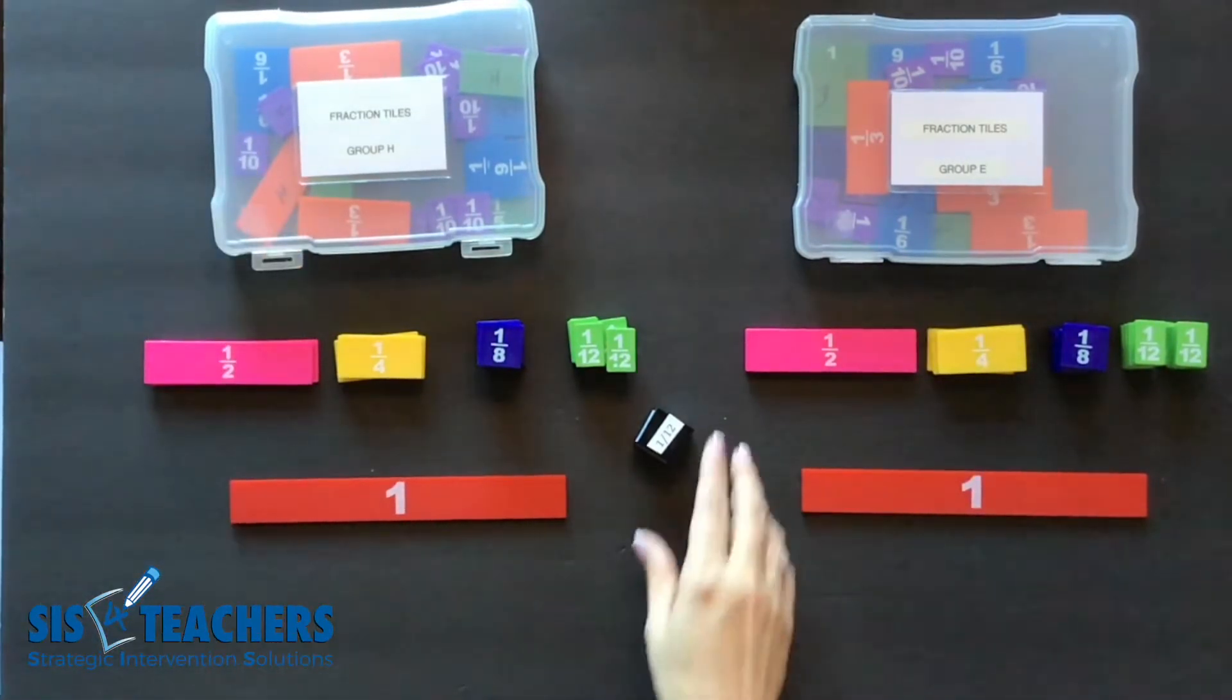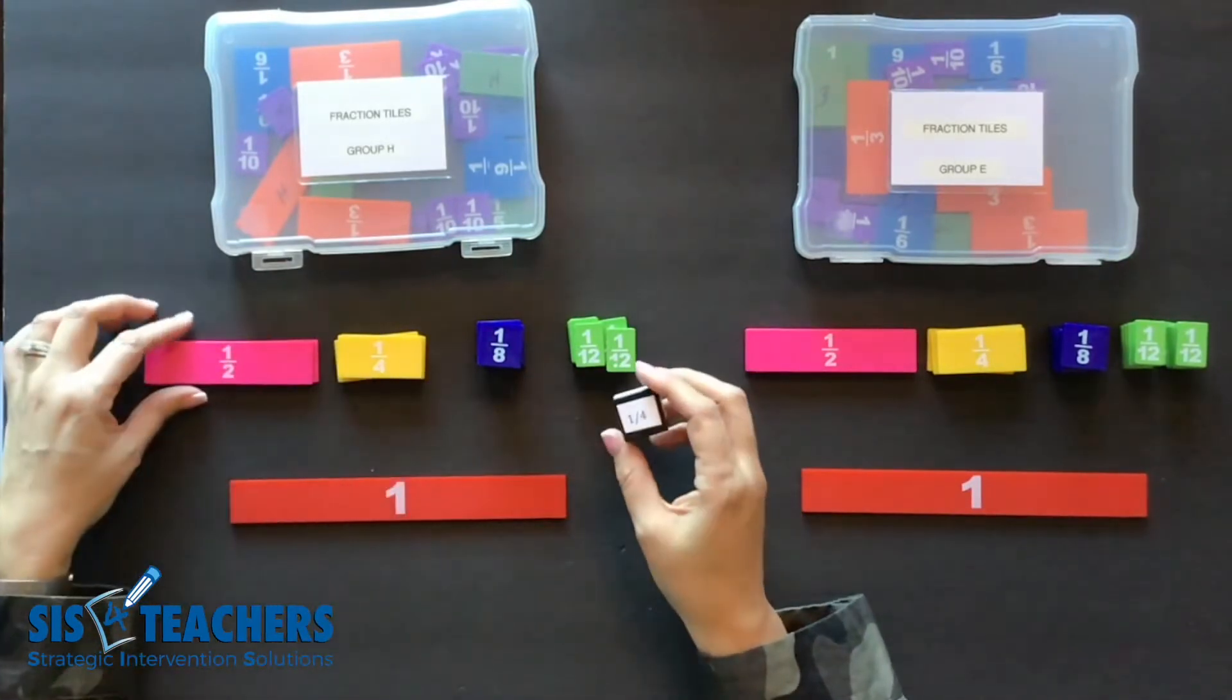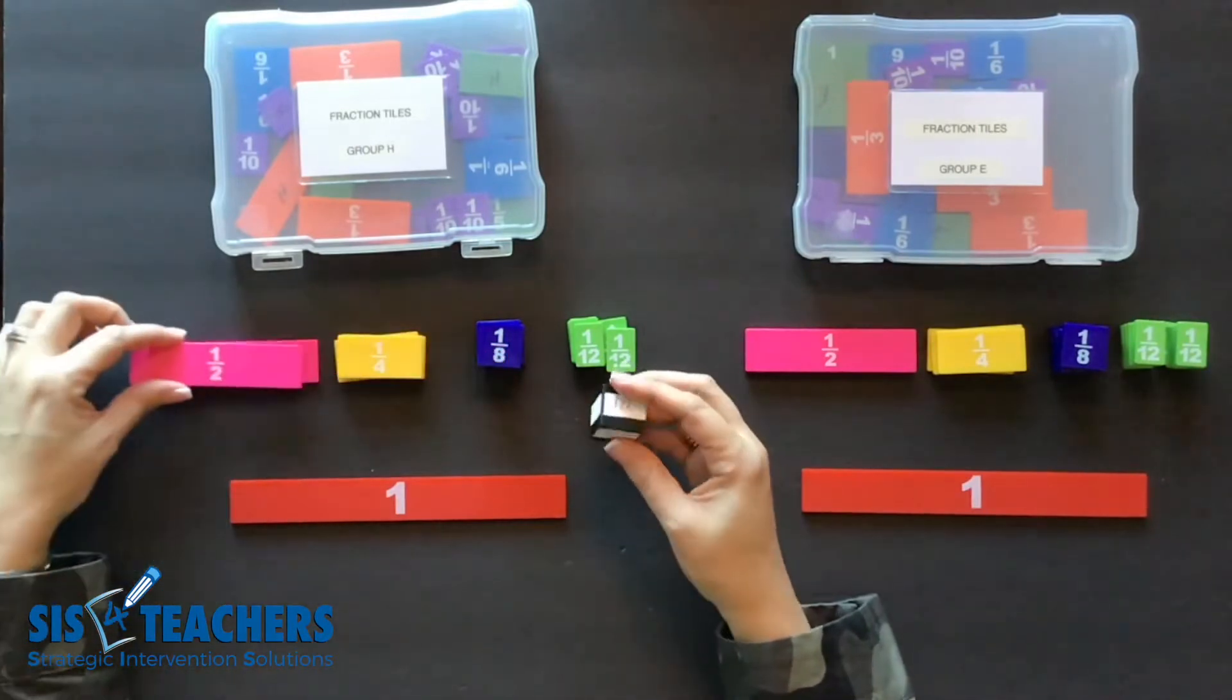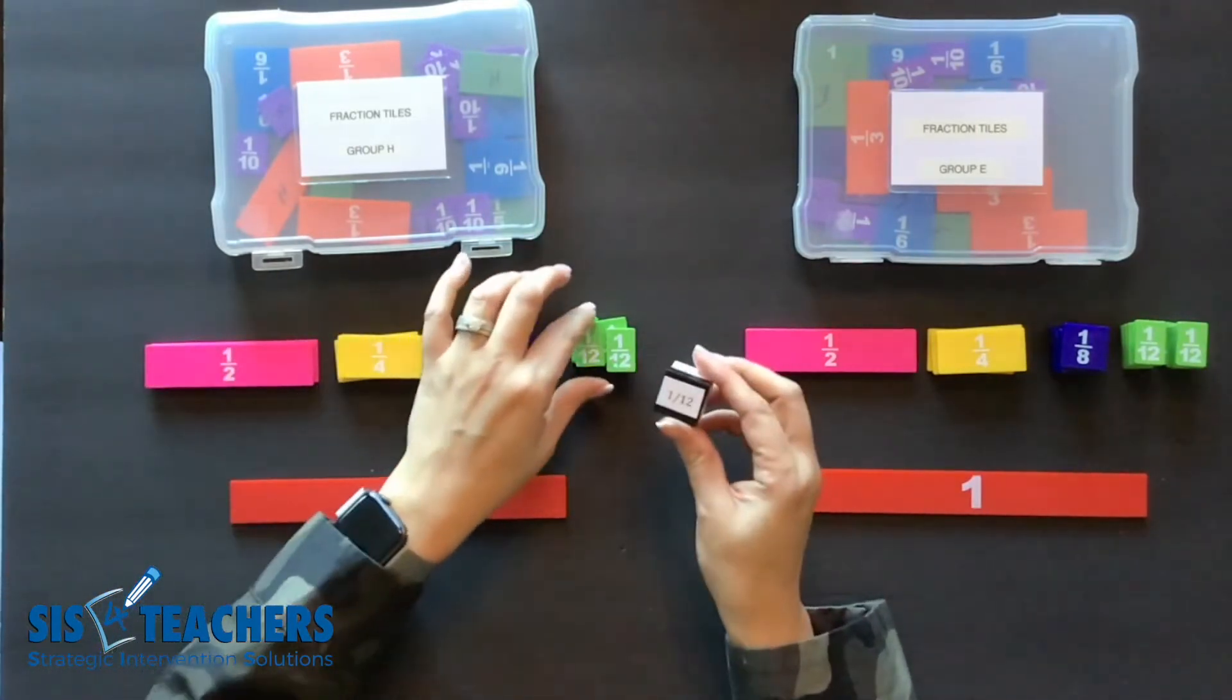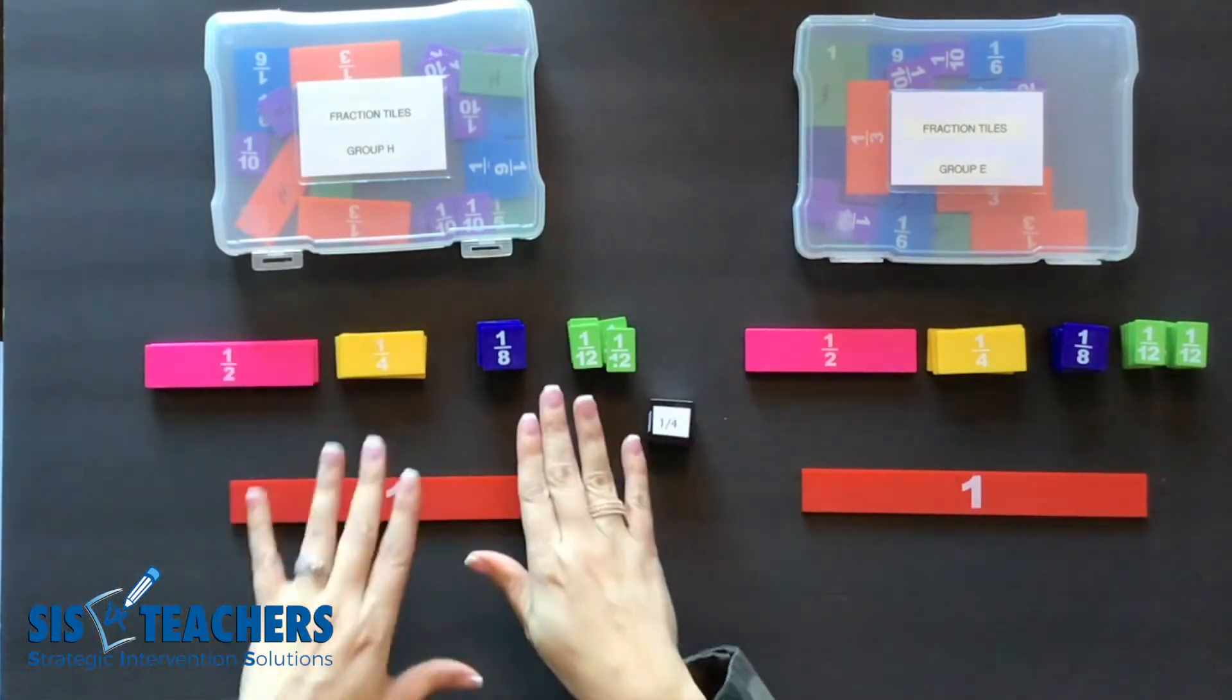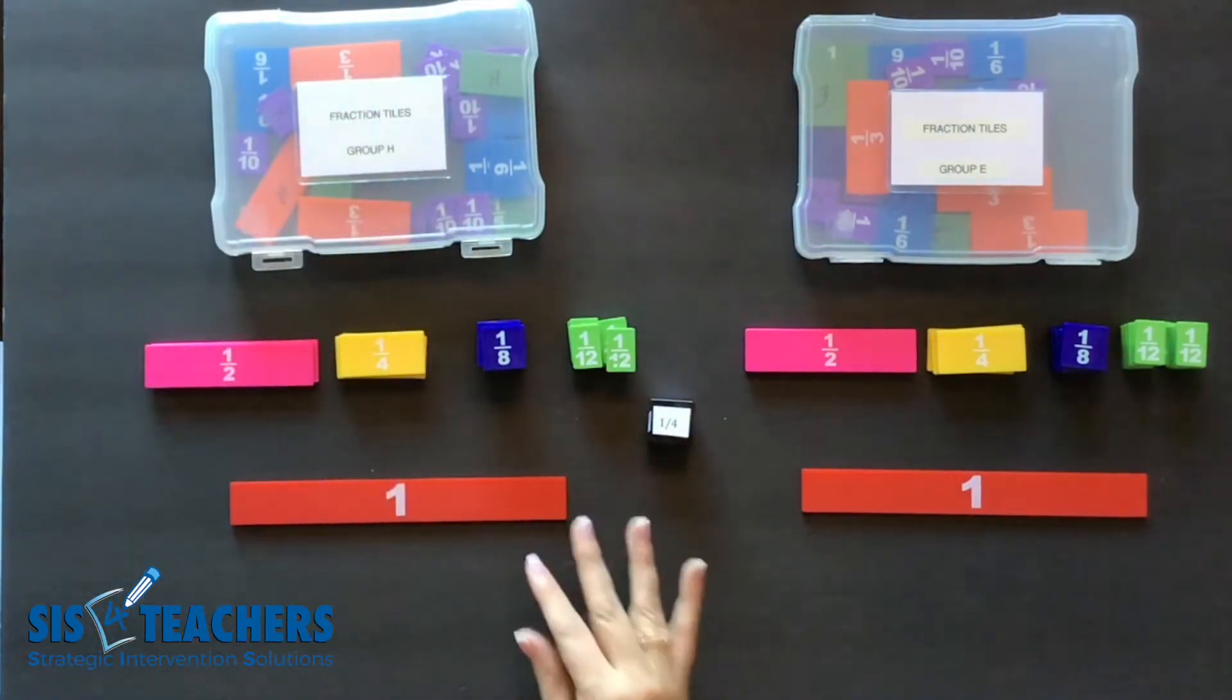For this game I decided to take a customized cube and make it into different fractions. We're going to be using the fractions of one half, one eighth, one twelfth, and one fourth. We've already set up ours by grabbing out of our container the proper fractions that we'll be using.